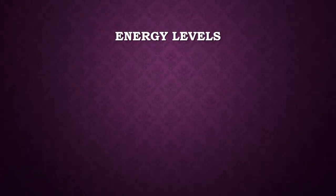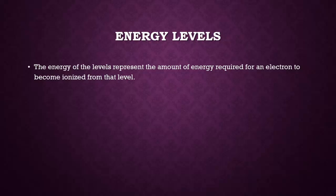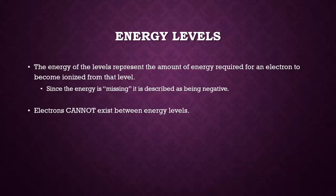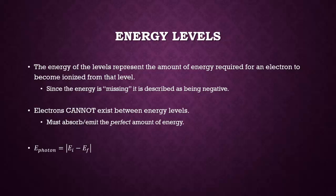The energy of the levels represents the amount of energy required for an electron to become ionized from that level. Since the electron is basically missing this energy, it's described as being negative — keep in mind that there's no such thing as negative energy. It's also important to note that electrons cannot exist between energy levels; they are either on n equals 1, 2, 3, 4, 5, or 6, or they have gained enough energy to become ionized. This means that when an electron makes a transition, it must absorb or emit the perfect amount of energy. The energy of the photon involved in the transition is equal to the absolute value of the difference between the energy levels.